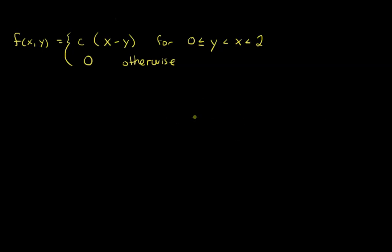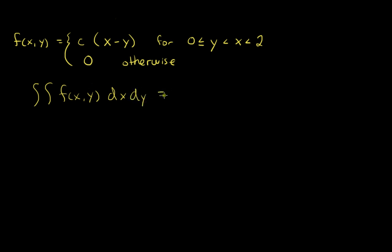In this video I want to do an example where we need to find the constant C such that this function is a PDF. I chose this example because it has a funky support, which is something we need to carefully think through as we try to integrate over F. In order for F to be a PDF, the integral of f(x, y) dx dy must equal one — the order of integration doesn't matter.